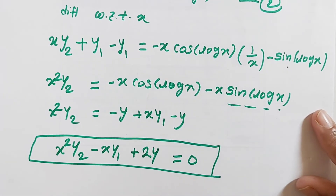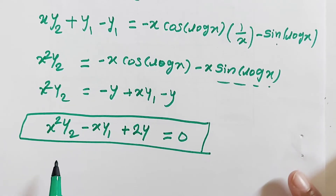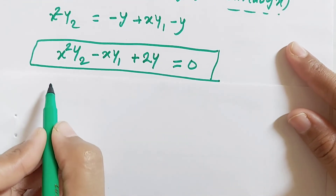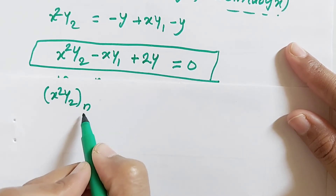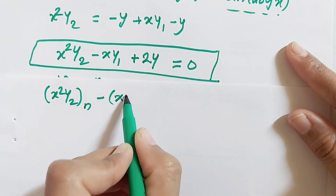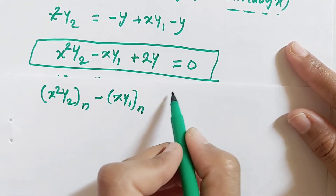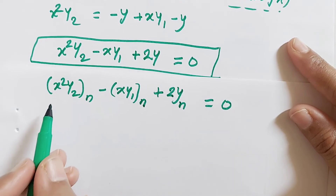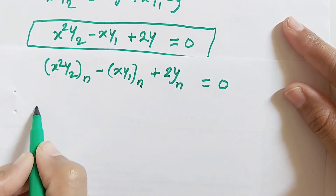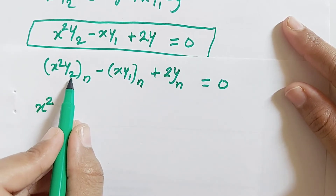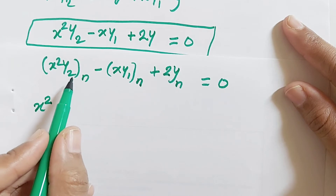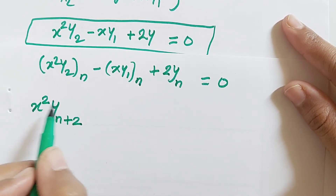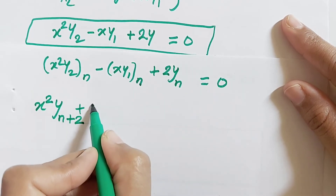This is our most important statement. In the next step we differentiate n times using the Leibniz rule. So we have the nth derivative of x²·y₂, minus the nth derivative of x·y₁, plus 2 times the nth derivative of y, all equals 0. Applying the Leibniz rule to the first term x²·y₂: x² as it is times y lower suffix (n+2), since y₂ already has two derivatives, the total gives y_{n+2}.